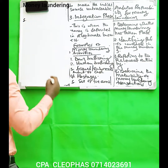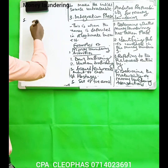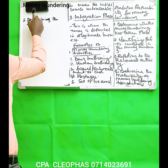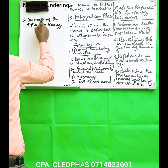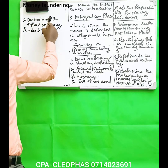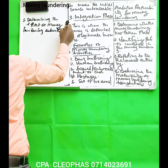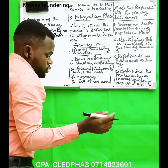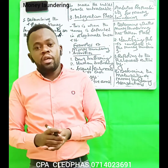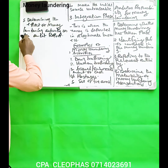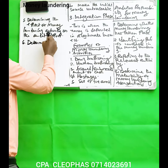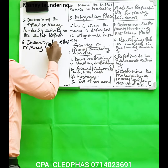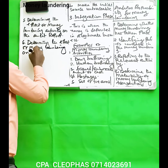Additionally, the auditor should determine the effect of the money laundering activity on the audit report. It is also important for the auditor to determine the effect of money laundering on the truth and fairness of the financial statements.